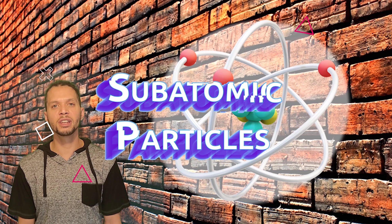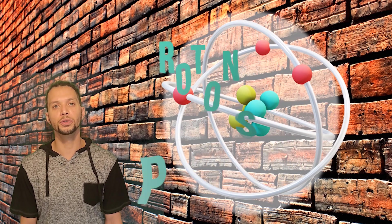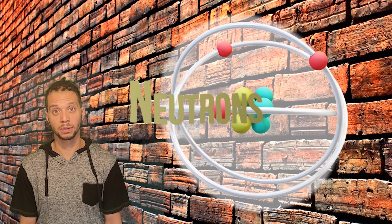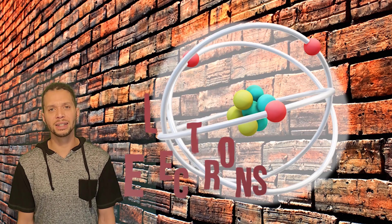The subatomic particles that make up an atom are called protons, neutrons, and electrons. Protons and neutrons are located in the nucleus of every atom, while electrons, yes you guessed it, are located somewhere within the electron cloud of an atom.